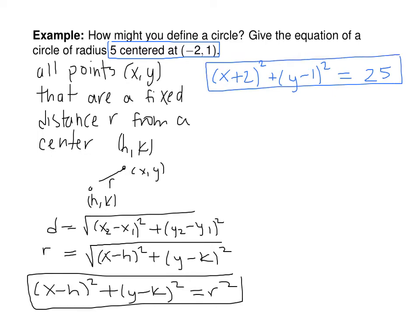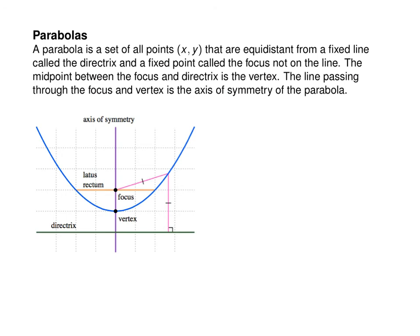A circle is the simplest conic section. The next conic section we're going to discuss is the parabola. A parabola is the set of all points (x, y) that are equidistant from a fixed line called the directrix and a fixed point called the focus, not on the line. The midpoint between the focus and directrix is the vertex, and the line passing through the focus and vertex is the axis of symmetry of the parabola.